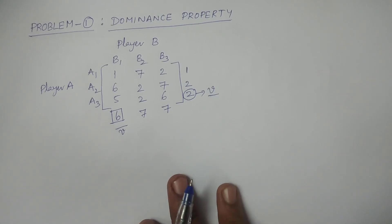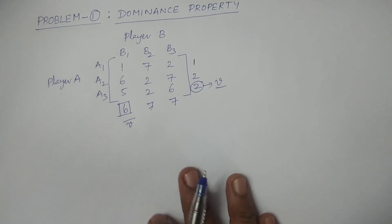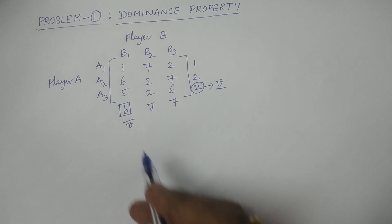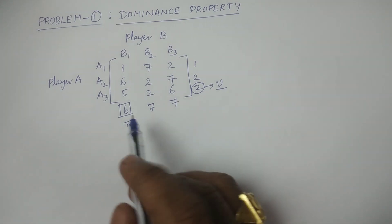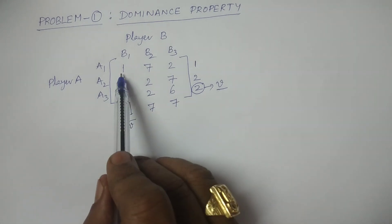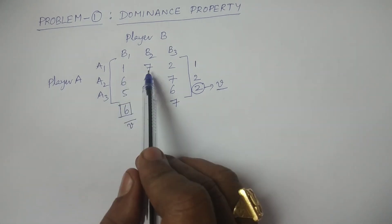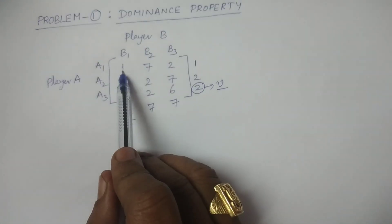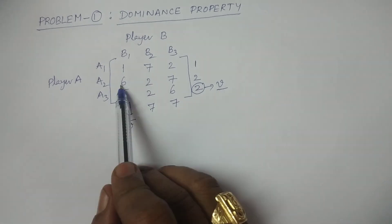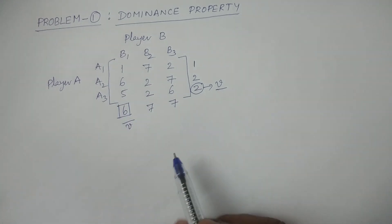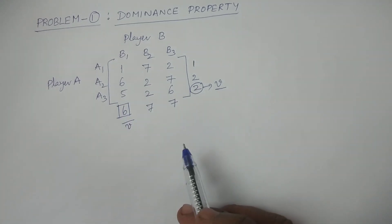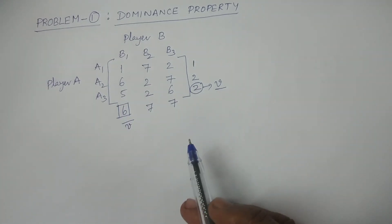Now you have to compare any two strategies. I am comparing B1 and B2: 7 is greater than 1, but 2 is less than 6. So these two strategies cannot be compared.